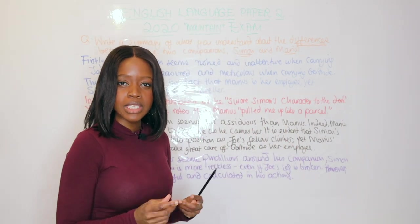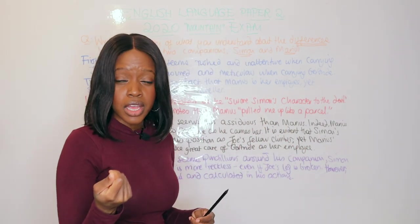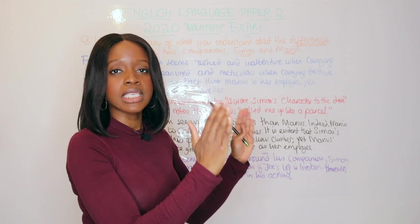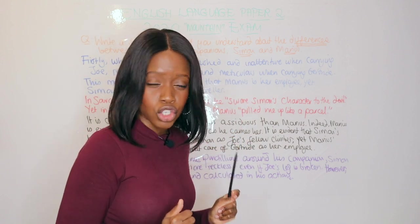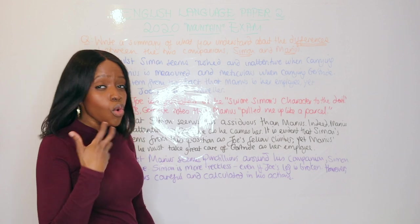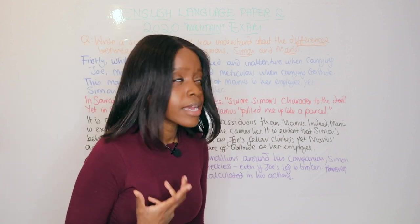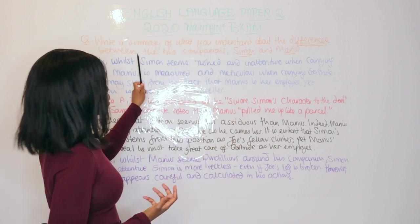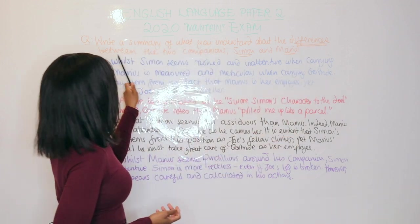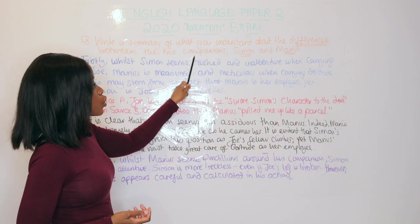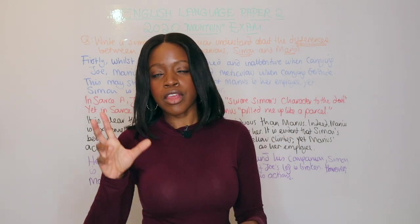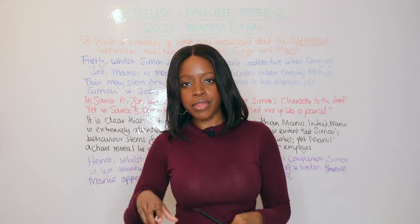The first thing you want to do is take your highlighter, look at the question, and highlight the keywords. The most important part of this question asks you to write a summary — it's always a summary question. Specifically: write a summary of what you understand about the differences between the two companions, Simon and Marius.